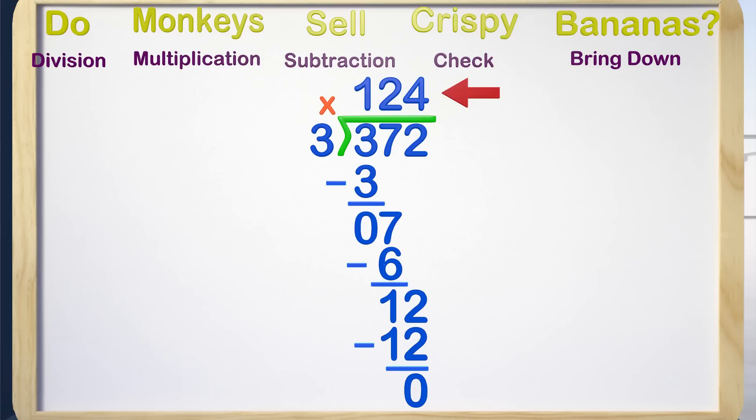The quotient, or answer, is what we wrote above the division box: 124 is the answer. Great job, kids! We just completed a long division problem. Now you know why they call it long division. Okay, so I'm not very funny, but at least we learned the basics of long division. Thank you for joining me today. The more you practice long division, the easier it will be, so keep on practicing.